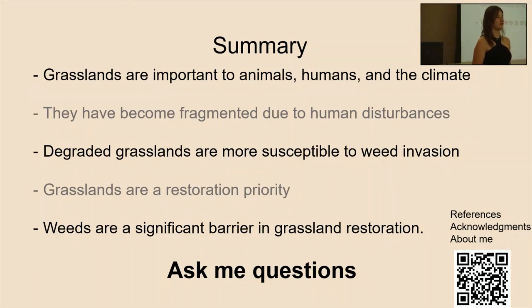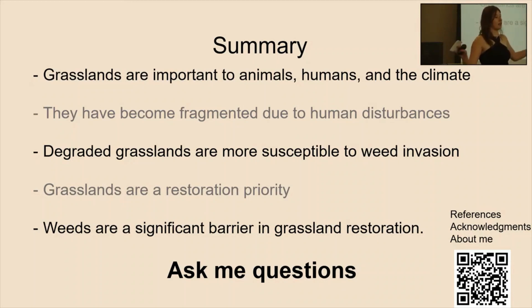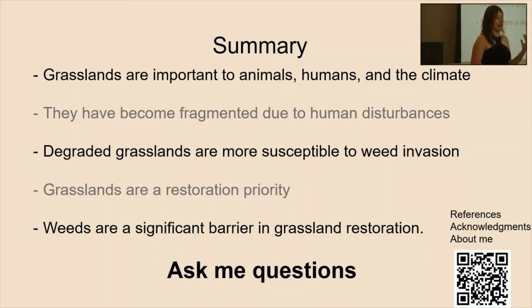I want to talk about how you have a weed that's native. So a weed is anything that you don't want growing in a particular area, and we don't want an abundance of certain types of plants in grasslands. We want to see mostly grass with some forbs and things like that. So if you have a native bush or something, you don't want that to take over the grasslands — we want the animals that need to eat the grass to be able to have plenty of grass to eat.